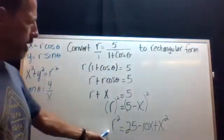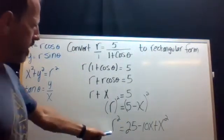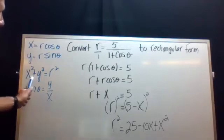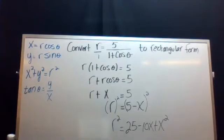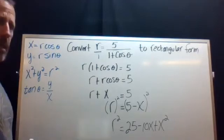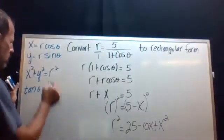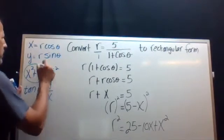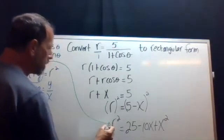And we still have an r in here. But remember, we can get rid of that by simply replacing it with this again. So we're going to make one more substitution here. We're going to take this portion right here, x squared plus y squared, because that's r squared. We're going to make that substitution in for r squared.